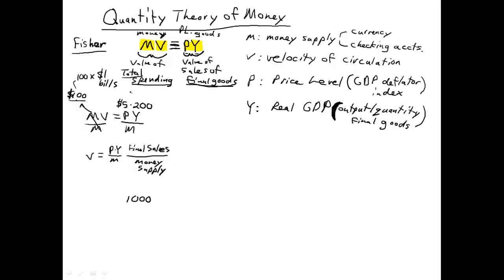How could $100 buy $1,000? Over here, 5 times 200 is $1,000. How could $100 bills buy $1,000 worth of output? Well, when we solve for V, 1,000 divided by 100, we see that V equals 10.